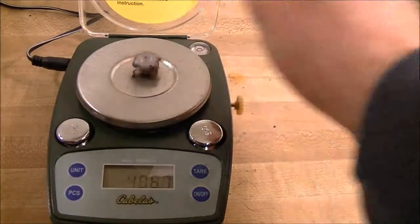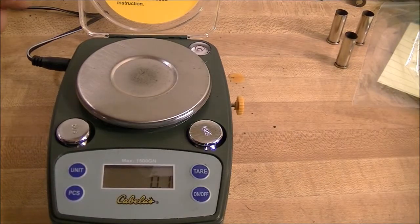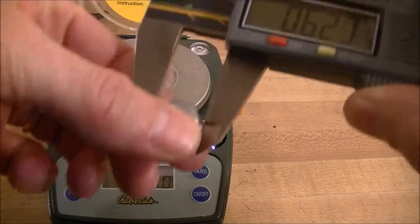On the scale there, if you notice it was 113 grains. Started out as a 115 grain bullet. Let's put the calipers on there and get some measurements.